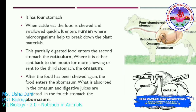This partially digested food enters the second stomach, the reticulum, where it is either sent back to the mouth for more chewing or passed to the third stomach, the omasum. After the food has been chewed again, it enters the abomasum.